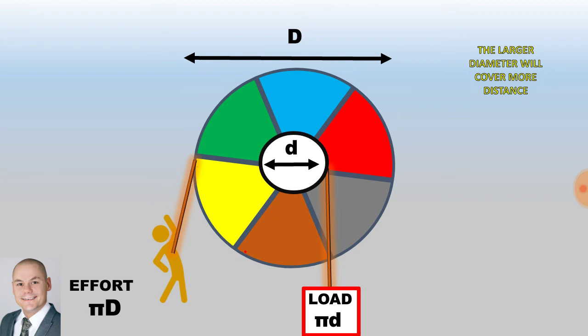You'll notice that the large diameter will cover more distance and the smaller diameter will cover less distance. In other words, a greater force is required for the outer diameter and a smaller force is required for the inner diameter.